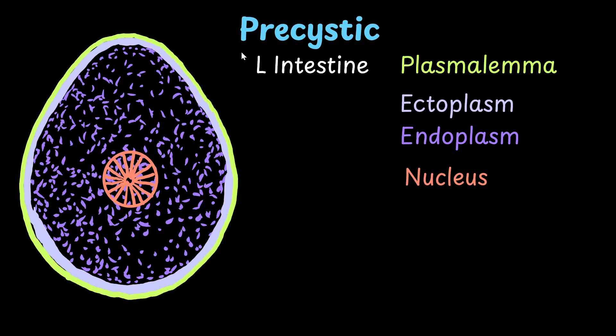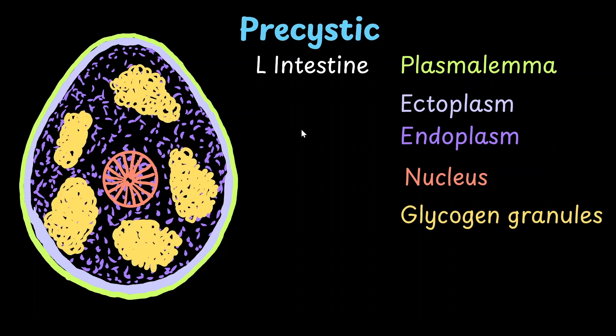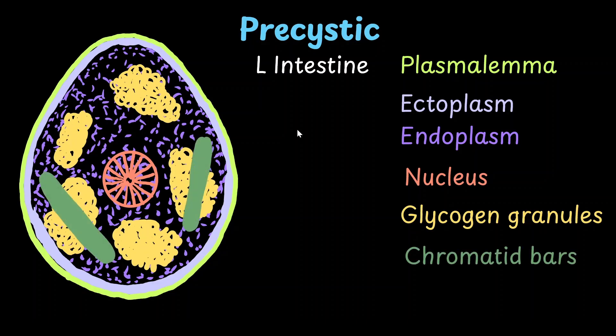The next stage is the pre-cystic stage, which is found in the lumen of the large intestine. It is a non-feeding, non-pathogenic, and non-motile form. It is small and spherical. Because it is non-feeding, it has glycogen granules as well as chromatin bars as its food reserves.